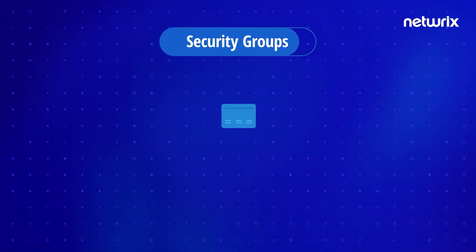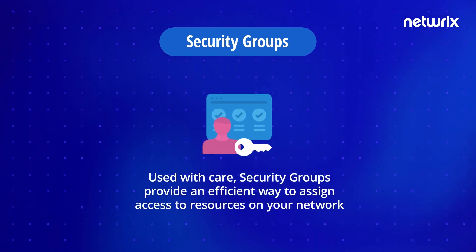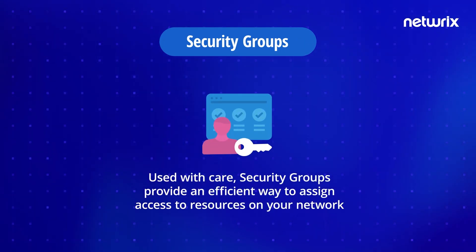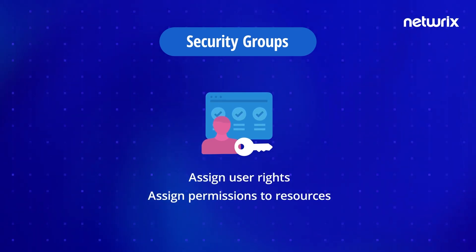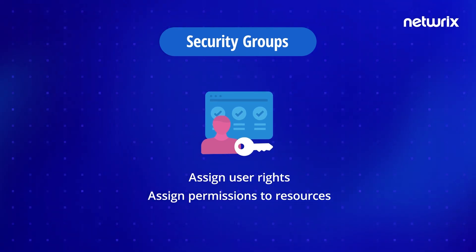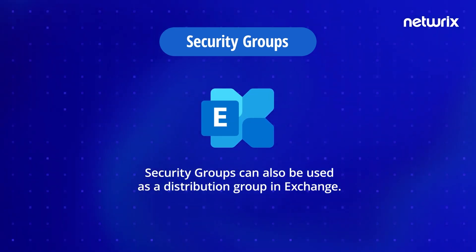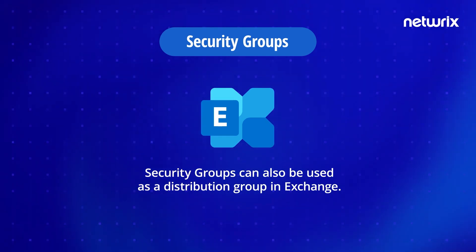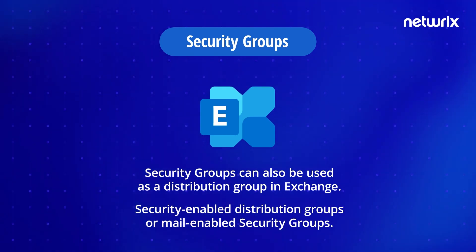Security groups should be used with care. They provide an efficient way to assign access to resources on your network, allowing you to assign user rights and permissions to resources. Security groups can also be used as a distribution group in Exchange — these are known as security-enabled distribution groups or mail-enabled security groups.